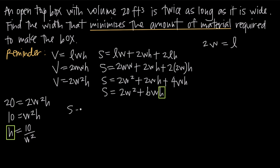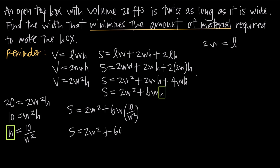Substituting h = 10/w² into the surface area formula: S = 2w² + 6w · (10/w²), which simplifies to S = 2w² + 60/w, or equivalently S = 2w² + 60w⁻¹. We've now accomplished the first two goals of any applied optimization problem: identified that we need to minimize surface area, and expressed it as a function of one variable only.